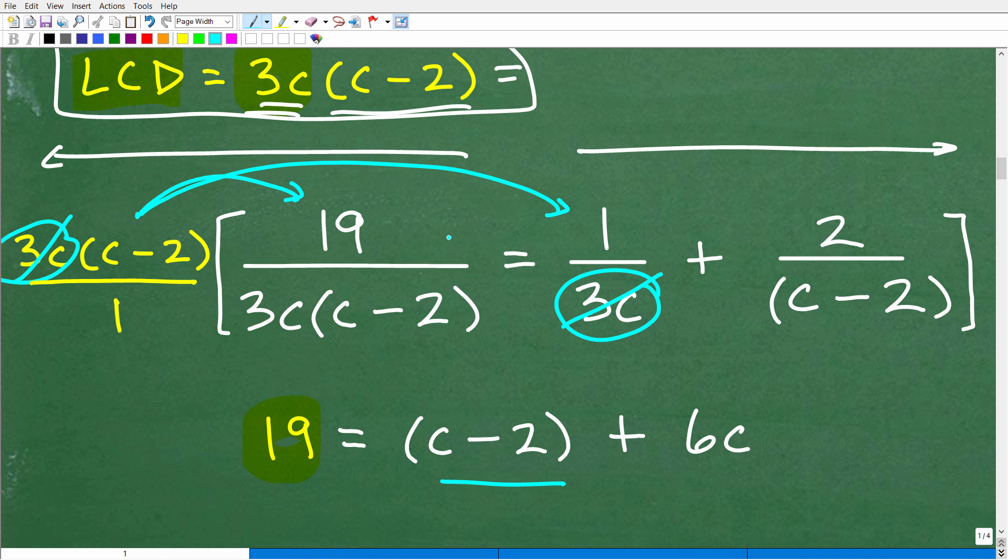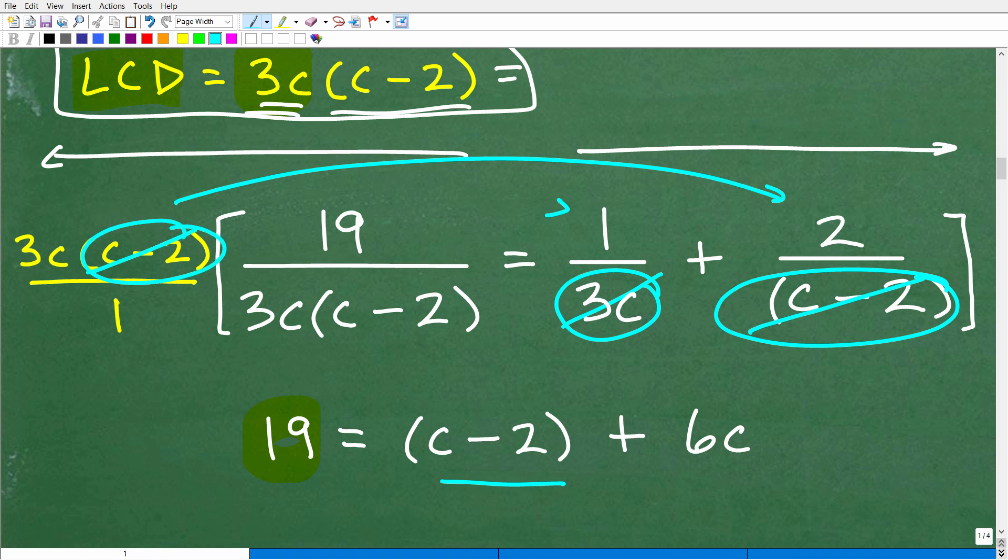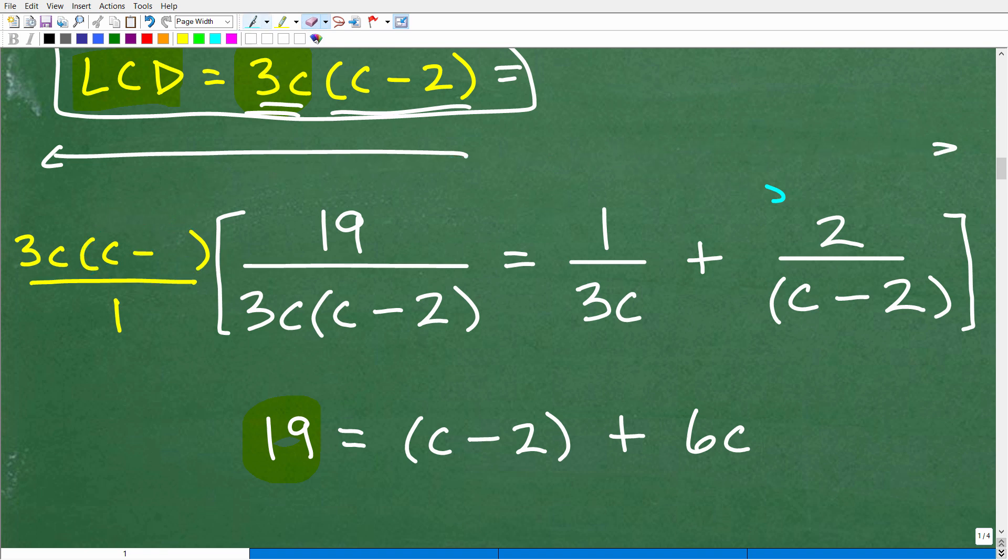That leaves us with 1 times C minus 2. Okay, so we have our equal sign here. And now we'll take our LCD and multiply it by this last term right here. So what cross-cancels? The C minus 2's cross-cancel. And that leaves us with 3C being multiplied by 2, which will give us a 6C. Okay, so make sure you really understand this part. I mean, each of the steps of this problem is critical. But this is a typical area where students get confused about is how to take this LCD and multiply it by each term.